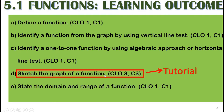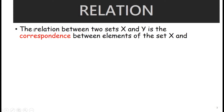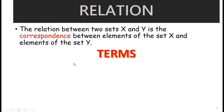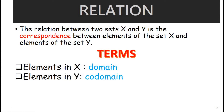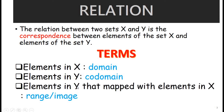Last objective is to state the domain and range of a function. Sketching the graph of a function will be covered more in your tutorial class. Now let's review relations. The relation between two sets X and Y is the correspondence between elements of set X and elements of set Y. The domain is the elements in X, the codomain is the elements in Y, and the elements in Y that map with elements in X is called the range, or image.